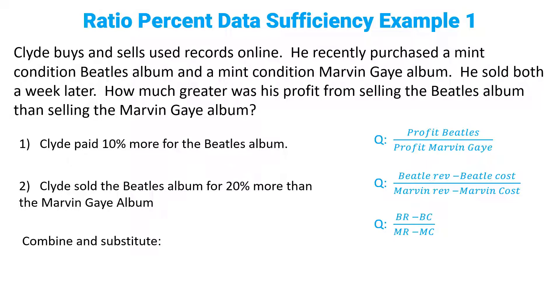Next step: we take each statement, take it out of English, put it into math, and then we substitute it into our ratio. If we can get all of the variables to cancel off, then that statement is sufficient. Let's take a look at statement number one and see what we have.